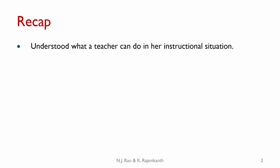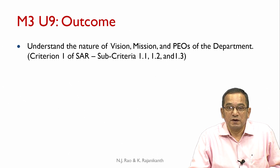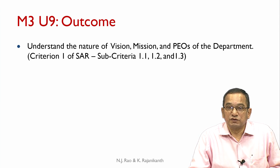Now we will commence detailed discussion of all 10 criteria of SAR for both Tier 1 and Tier 2 Institutes. In this unit, we look at Criterion 1 which is concerned with Vision, Mission and PEOs of the Department. The outcome for this unit is to understand the nature of Vision, Mission and PEOs of the Department. We will look at sub-criteria 1.1, 1.2 and 1.3 in this unit.